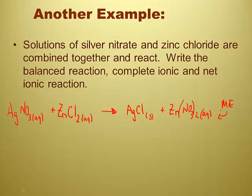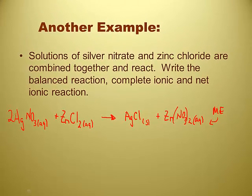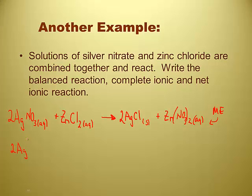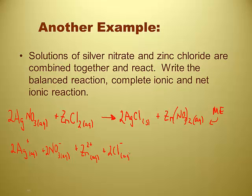We balance the molecular equation, then write the complete ionic equation. Anything that's a strong electrolyte dissociates. Silver nitrate is a strong electrolyte — the coefficients apply to both the silver and the nitrate. Zinc chloride is a strong electrolyte — the subscript only applies to the chloride. The silver chloride precipitate stays together as a solid. We have two nitrates, both aqueous. This is the complete ionic equation.